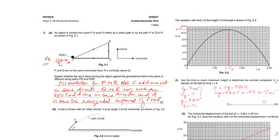These are Paper 2 AS level September November 2015, Paper 2 Variant 1, and the question number is 3. This question is about projectile motion along with a question related to dynamics.